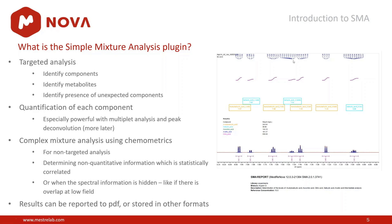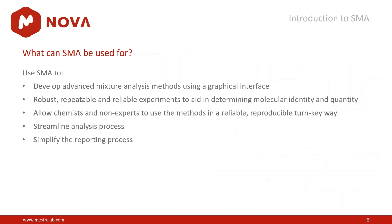Finally, we also want to facilitate the reporting process. In this image on the right you have an example of what a report may look like — quantifying a number of components, reporting the results with a series of customizable information, and reflecting in the spectrum the different components where they have been identified as well as the integration. Basically: identify, quantify, extract additional information from mixtures, and build reports easily.